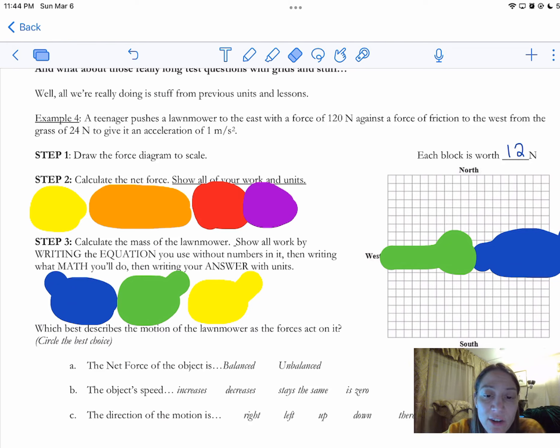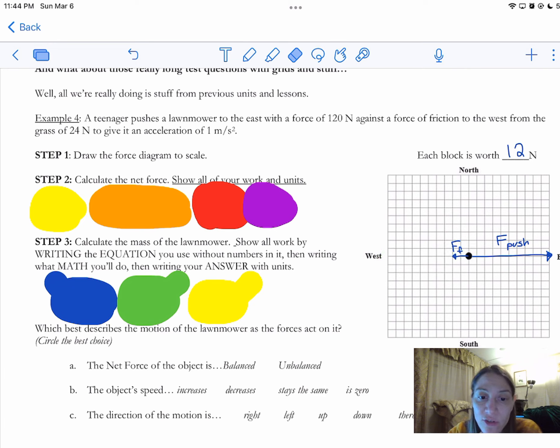So east is the direction that the teenager is pushing, so I drew that one 10 boxes long to the east. There's a dot in the middle. You can see that on your paper. Friction is pointing to the west and that one is only going to be two boxes long. So there it is, two boxes long and I labeled them both. Remember, you've got to label them so that people know what you're talking about. You could label it a little bit differently. That would be okay. I labeled it push and friction. You can label it teenager or applied, whatever would be fine.